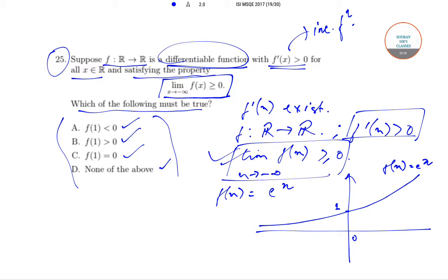And f'(x) exists throughout since there is no sharp edge. If we find f'(x), f'(x) is equal to e to the power x which is existing anyways.